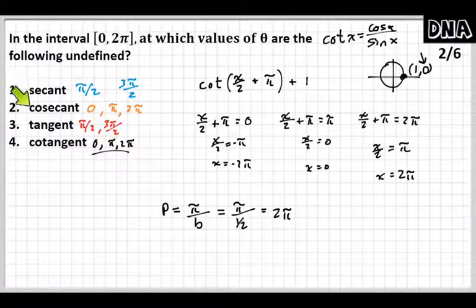Yeah, for secant and cosecant, you're adding half the period to find every asymptote. But for tangent and cotangent, you add the whole period to find every asymptote. So if I added 2π, I would get 3π.